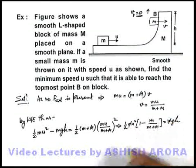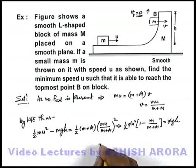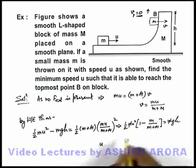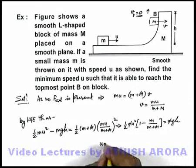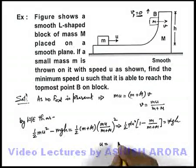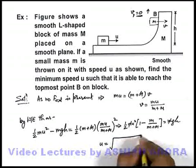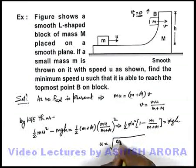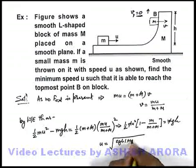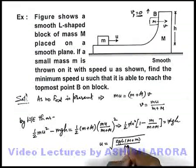This small m also gets cancelled out, so I'll be easily able to get u, the initial speed which is required to be equal to root of, I'll take the other terms on the other side it'll be 2 g h, m plus small m divided by capital M.